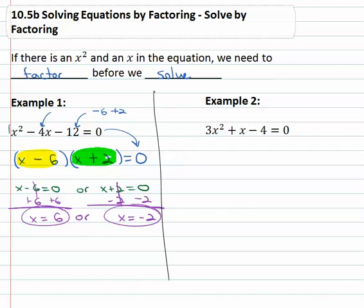Let's try another example. In example two, we have 3x squared plus x minus 4 equals zero. Again with x squared and x, the only way we have to solve those right now is to factor, still equal to zero.